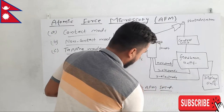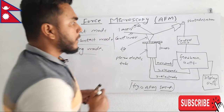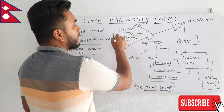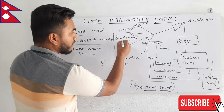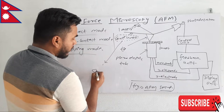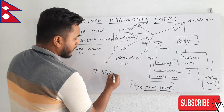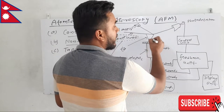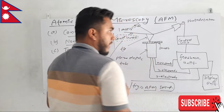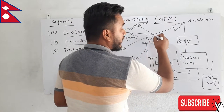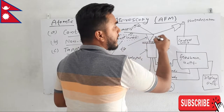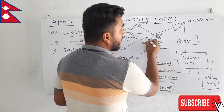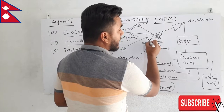The most important component of atomic force microscopy is the cantilever. This cantilever is made up of silicon or silicon nitride. This tip is scanned over the sample — in atomic force microscopy it will be oscillated, and we measure the force acting between the sample and the tip.